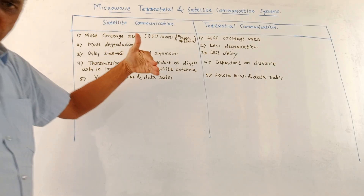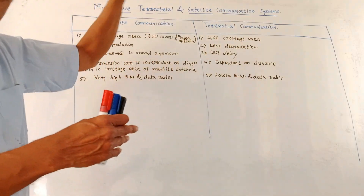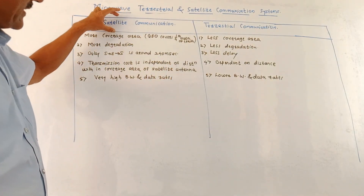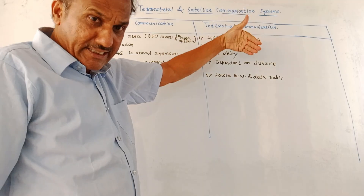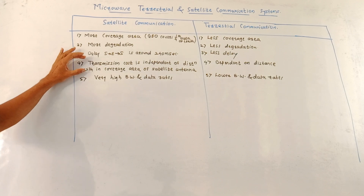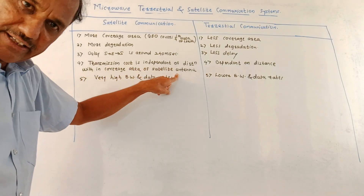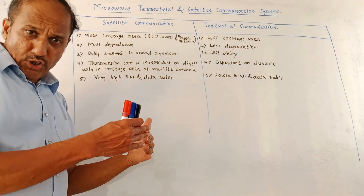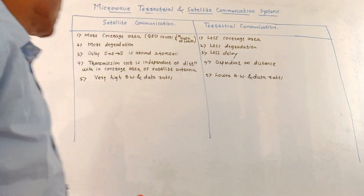For one complete cycle of data passing from satellite to earth station and back, the delay is typically around 240 milliseconds in satellite communication, whereas terrestrial communication has comparatively very less delay. In satellite communication, transmission cost is independent of distance within the satellite antenna's coverage area, whereas in terrestrial communication the transmission cost is directly proportional to distance — as distance increases, transmission cost increases.